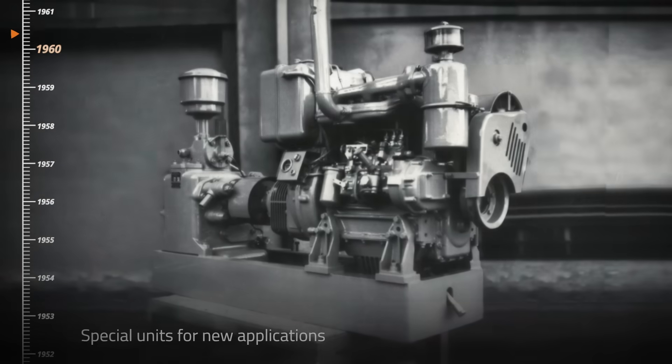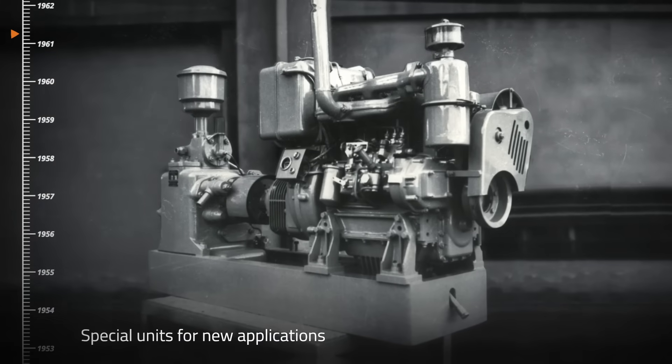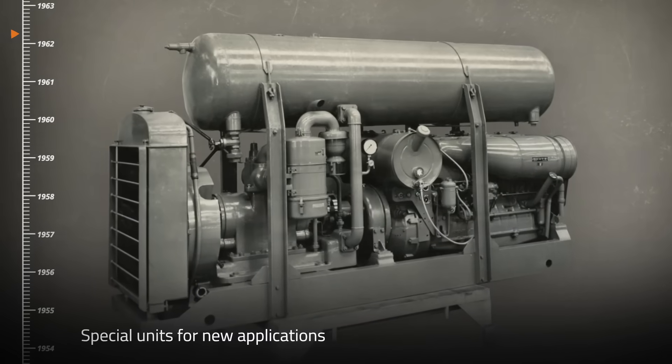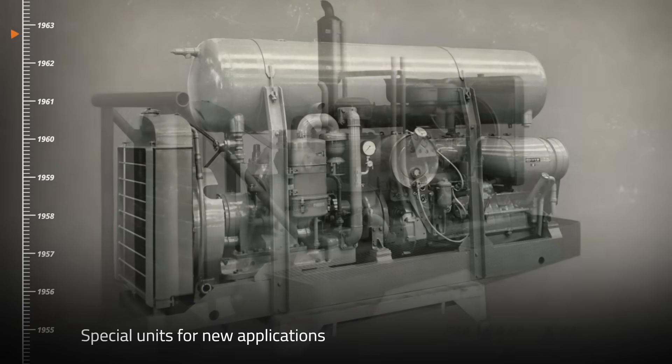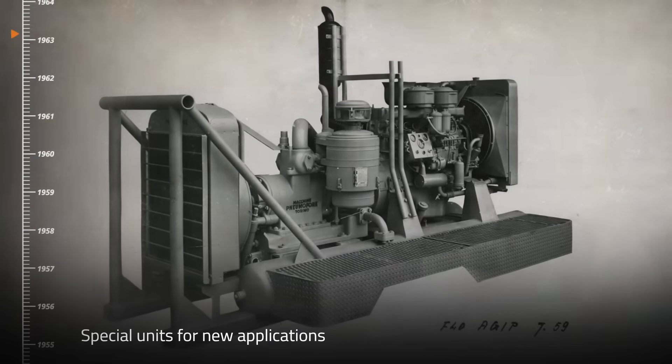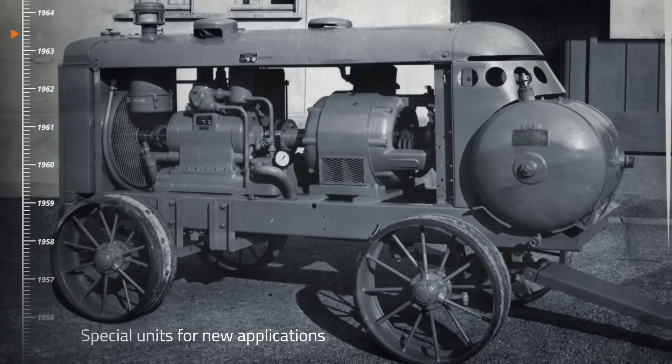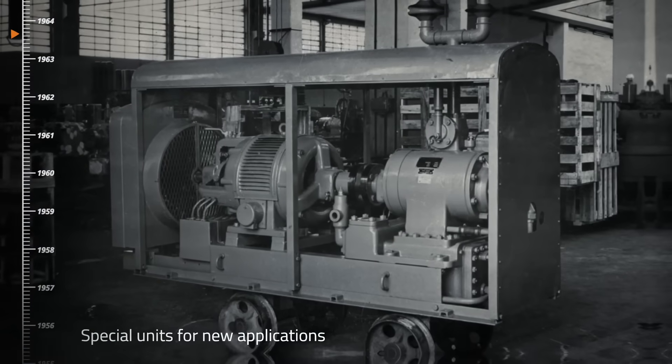By the 50s and 60s, special models were designed and produced to meet the emerging market's needs. Here we see examples of diesel drive machines on track wheels for mines or air-cooled for skid-mounted systems.